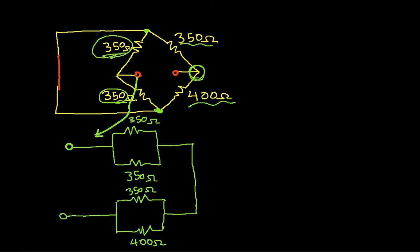When I draw it this way, hopefully it's much clearer that I have two parallel combinations which are in series with each other. So let's start with the top parallel combination, these two guys. In parallel, two 350-ohm resistors will just be half of 350-ohms, which is 175-ohms.